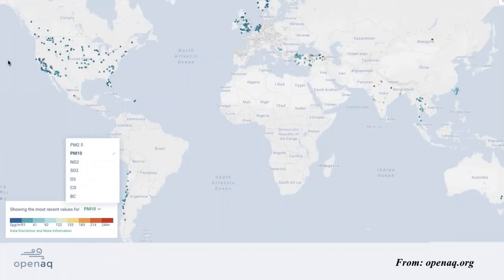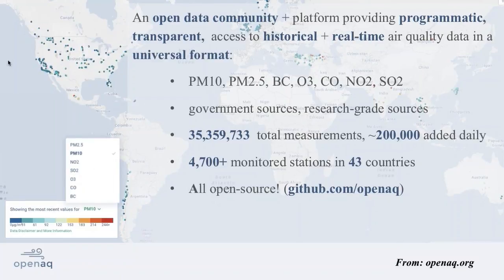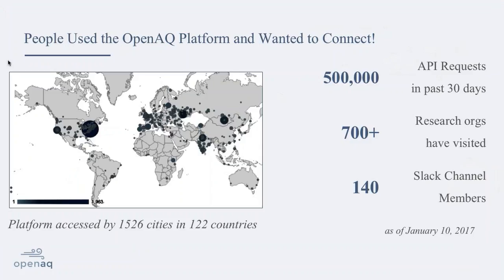This shows a snapshot of our PM10 coverage. We have seven different pollutants. To date, we have data from 43 countries, add about 200,000 data points per day, and currently have about 35 million data points — all open source. Are people actually using this data? Yes. We have about half a million requests per month to our system. About 700 research organizations have visited our platform to access data, and we have a pretty active community on our Slack channel.